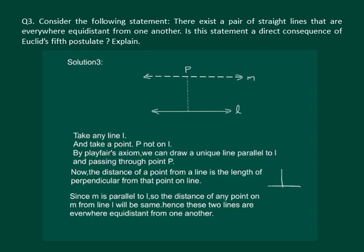We have proved that there exist a pair of straight lines that are everywhere equidistant from one another. Also, we have seen that this statement is a direct consequence of Euclid's fifth postulate.